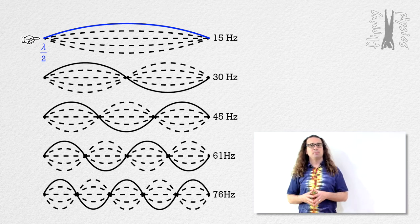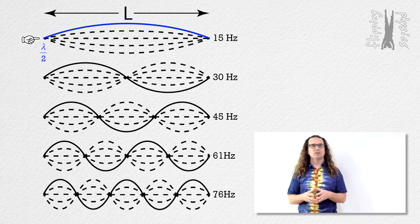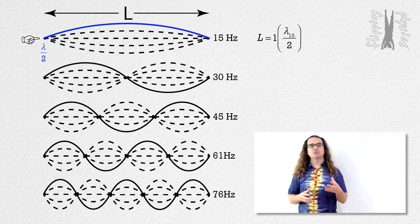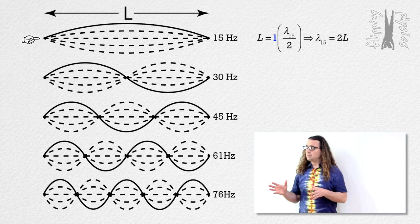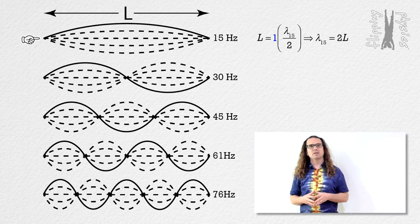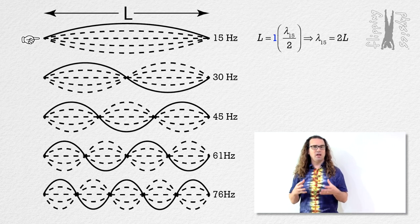Great. Let's define capital L as the length of the string between the two ends. That means L equals one half wavelength. Therefore, the wavelength of this wave equals two times capital L, the length of the string. That looks weird. Why is the one in front of the parentheses? It's not doing anything mathematically. Valid point, Bo. I've put it there because there is one half wavelength at this frequency and it will help us to identify a pattern later.